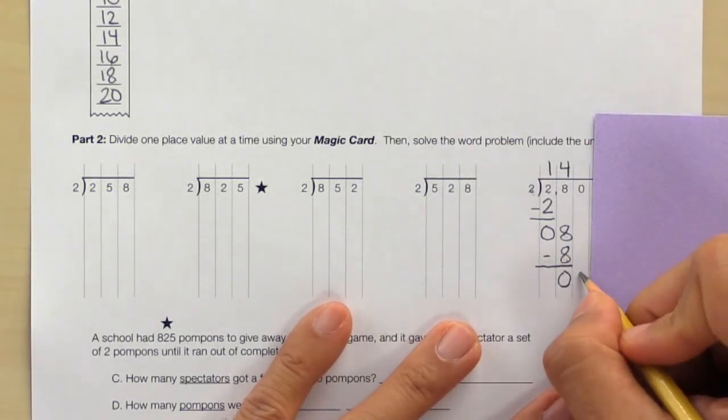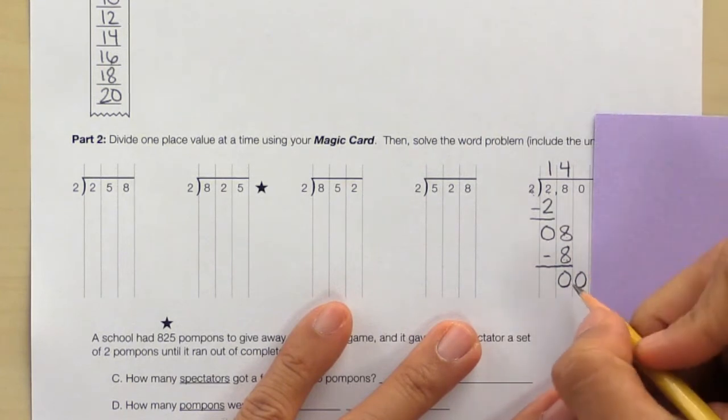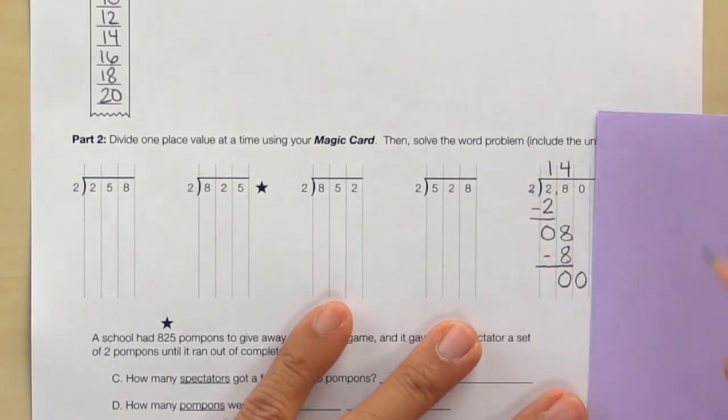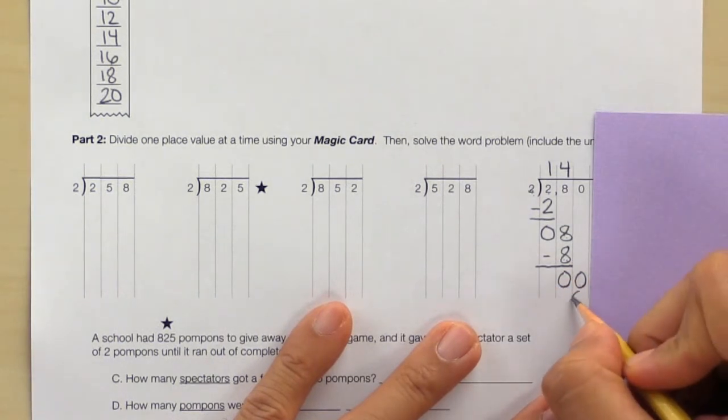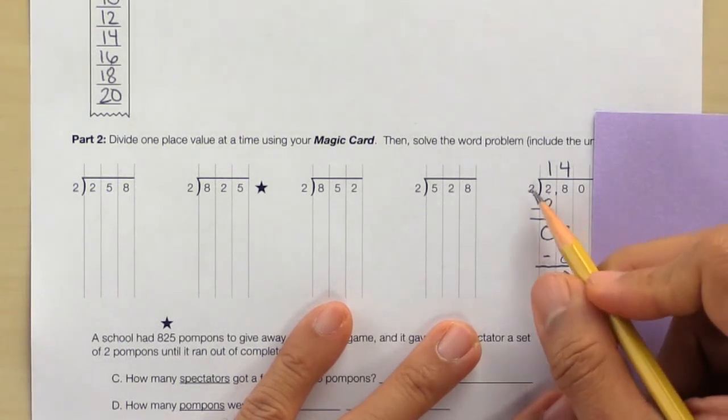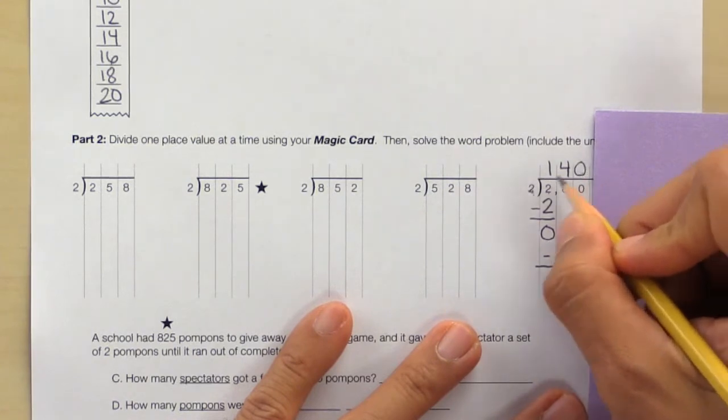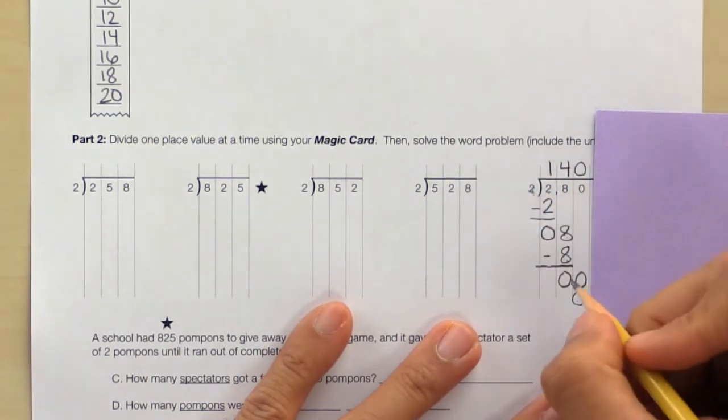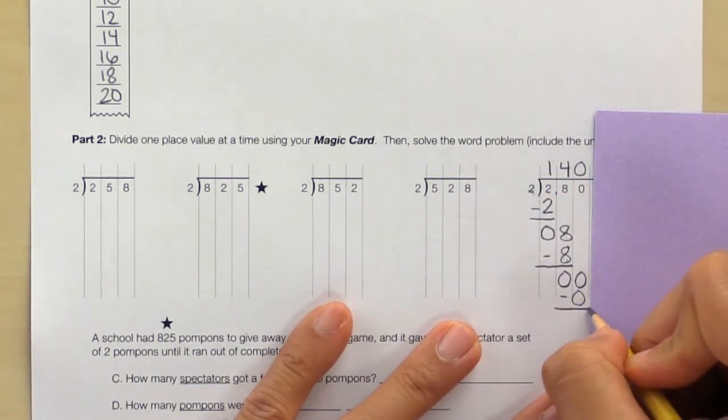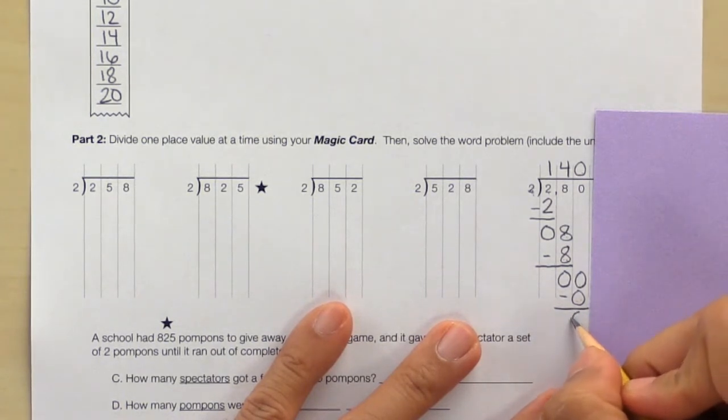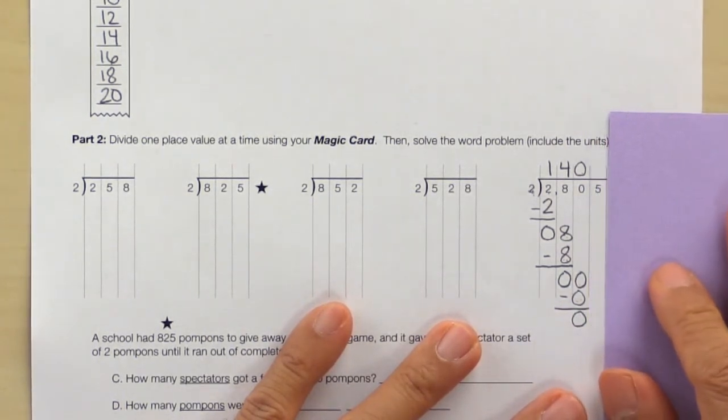Bring down the 0. Can we do 0 divided by 2 evenly? Yes. So write it down. If 0 divided by 2 equals 0, then 0 times 2 equals 0. That's true. Subtract and slide over.